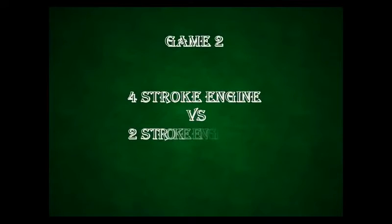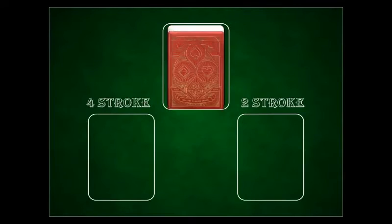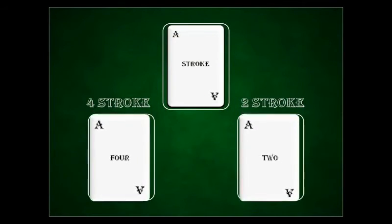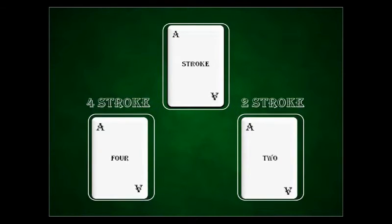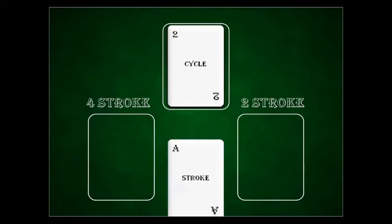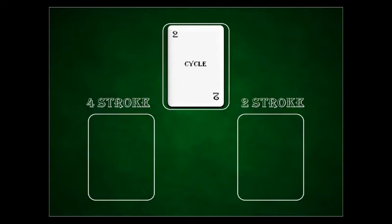Now let us discuss the basic differences between 4-stroke and 2-stroke engines. First is strokes: the piston in a 4-stroke engine makes 4 strokes that drive the crankshaft, whereas in a 2-stroke engine the piston makes 2 strokes. Next is cycle: the 2-stroke engine completes one cycle of events for every revolution of the crankshaft, compared with the 2 revolutions required for the 4-stroke engine cycle.